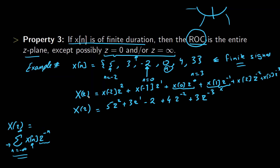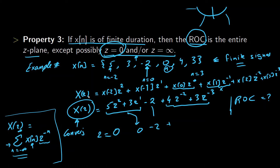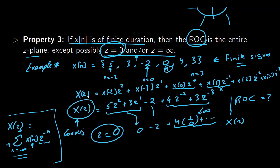We now need to determine the region of convergence — when does this X of Z converge, and when does it diverge? If we set Z equal to 0, the positive-power terms become zero, but the negative-power terms behave like 4 times 1/0, which goes to infinity. So for Z equal to 0, X does not converge — Z equals 0 is not in the ROC.